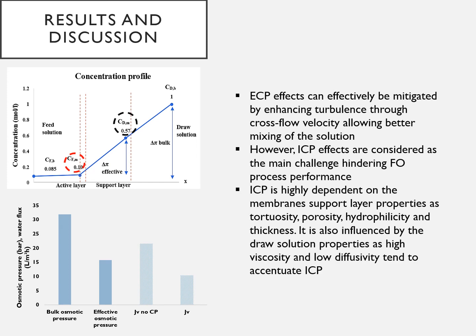ECP effects can be effectively mitigated by enhancing turbulence through cross-flow velocity, allowing better mixing of the feed solution. However, ICP effects are considered as the main challenge hindering FO process performance and causing important flux decline. ICP is highly dependent on the membrane support layer properties such as tortuosity, porosity, hydrophilicity, and thickness. It is also influenced by draw solution properties, as high viscosity and low diffusivity tend to accentuate ICP.